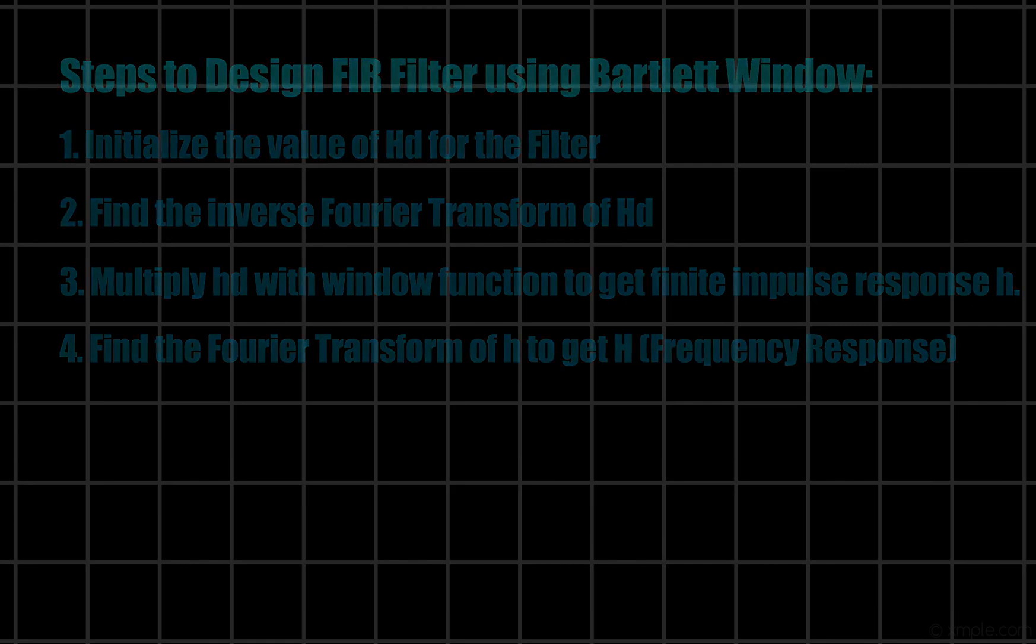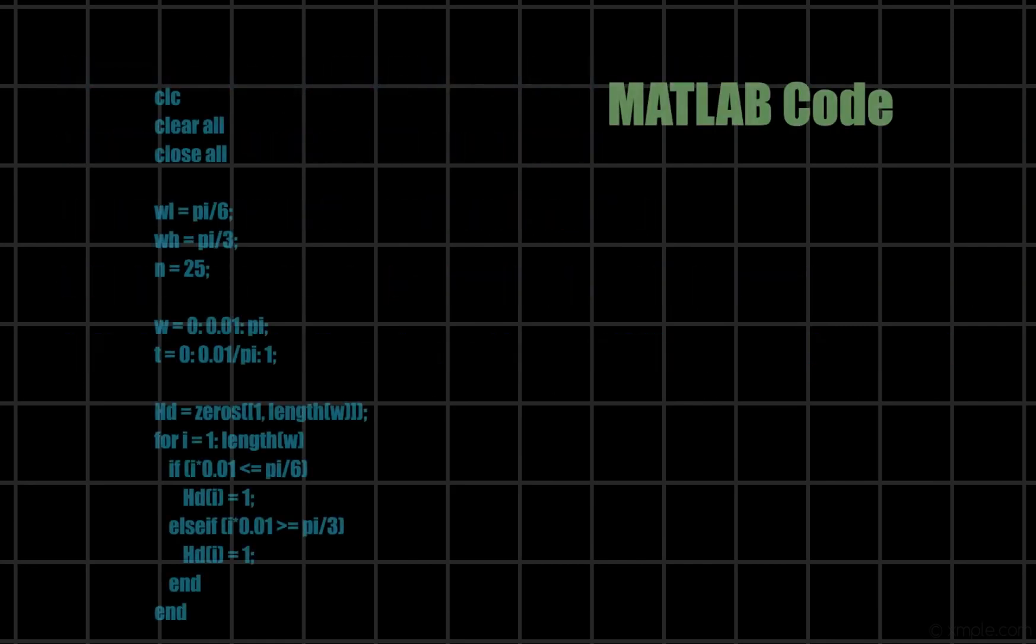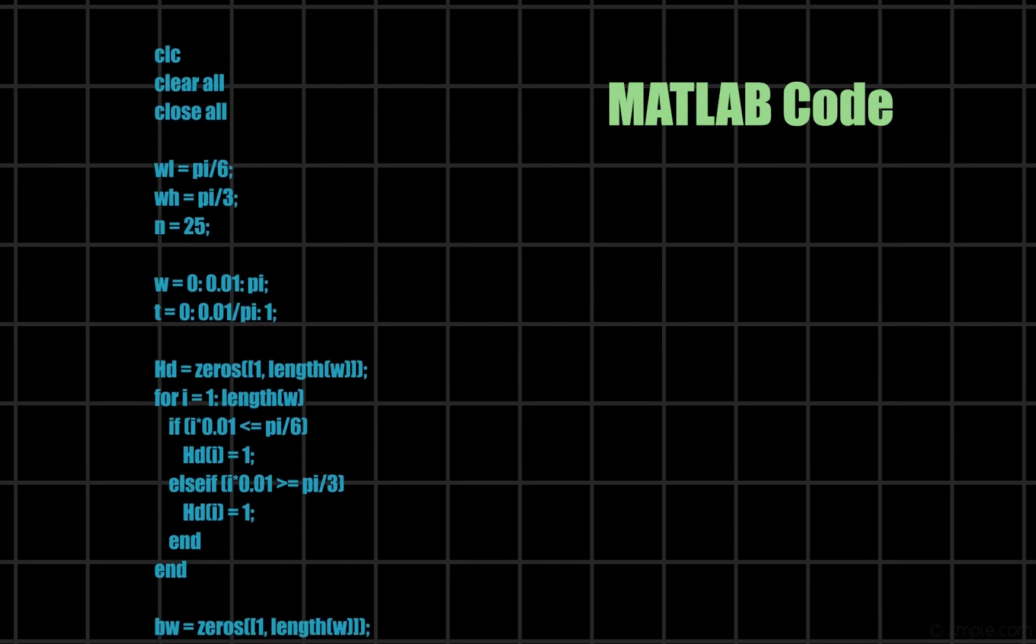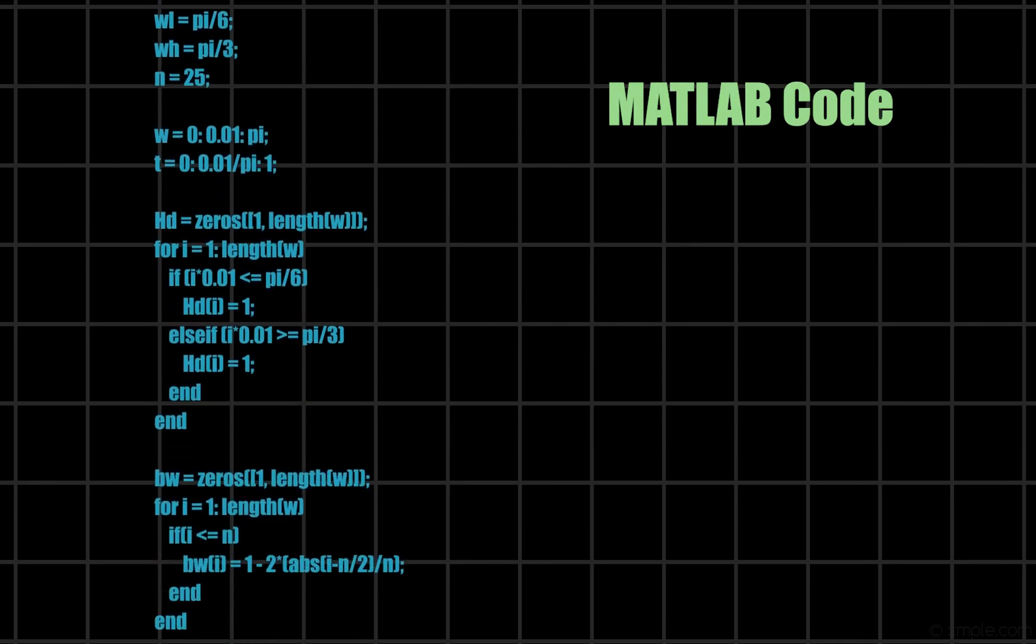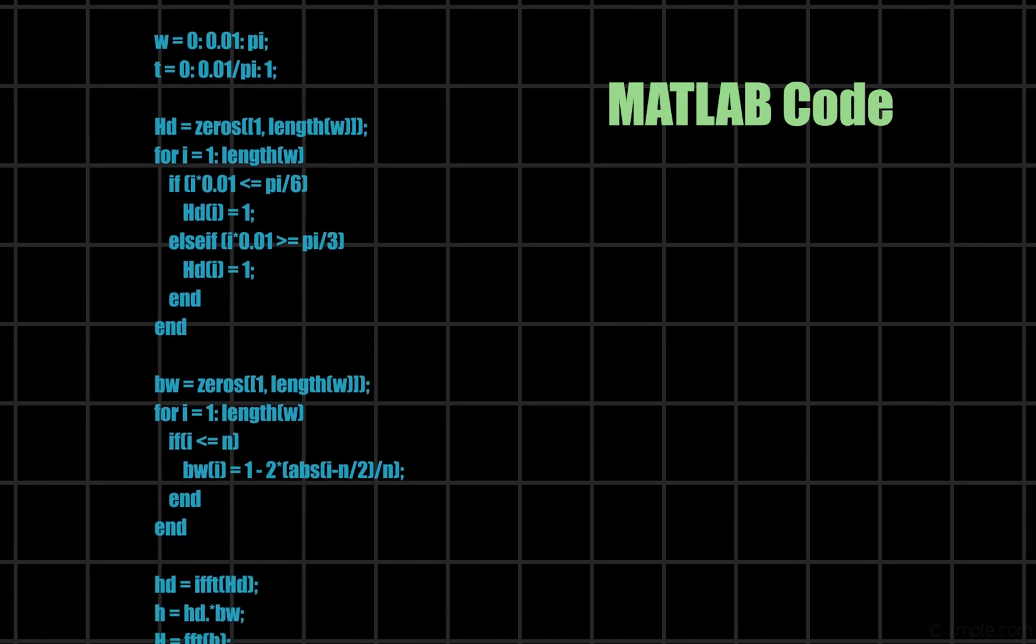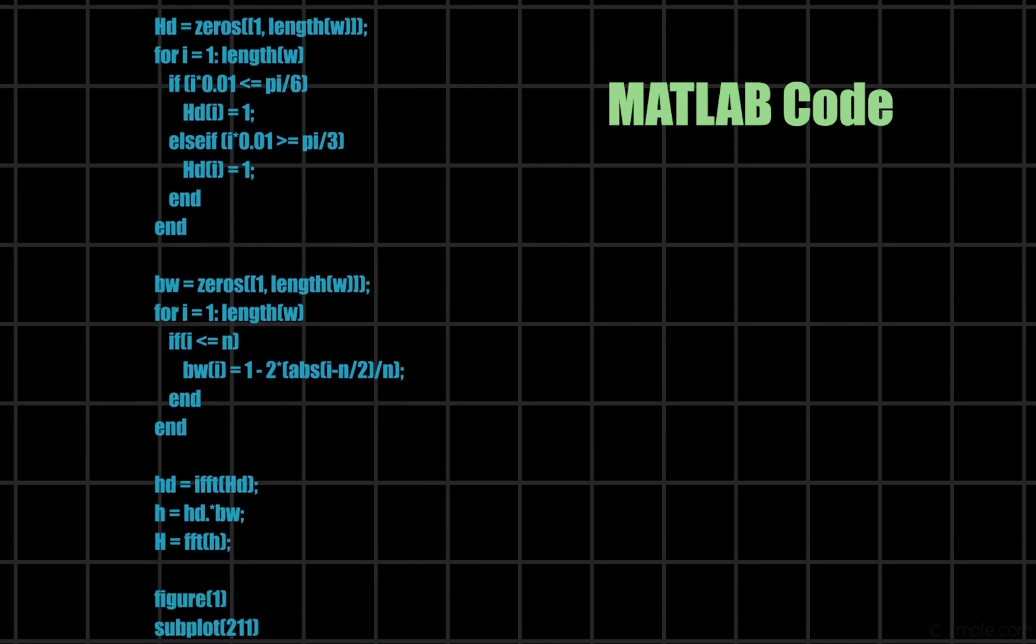Now, let us look at the MATLAB code. In the starting, I have initialized all the variables and domains we require for plotting the graph. Here, I have initialized the HD spectrum as given in the question, which is followed by the construction of Bartlett window function in time domain using for loops.